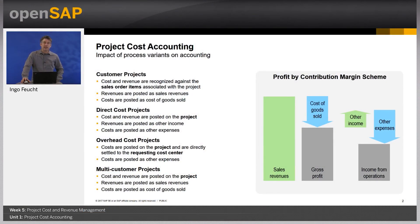I would like to start with the impact of the project type on finance. Customer projects are, as the name says, customer facing, and they are always linked to a sales order. We learned about this in Week 2. This integrates the projects to the normal order-to-cash scenario and enables standard functionality, such as automatic revenue recognition, which will be covered in the next unit, and profit analysis reporting. Revenues of customer projects are posted as sales revenues and costs of goods sold, as you can see on the right side of this slide.